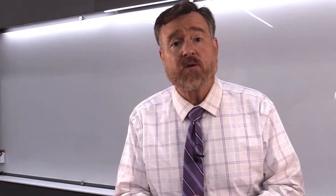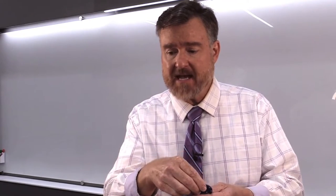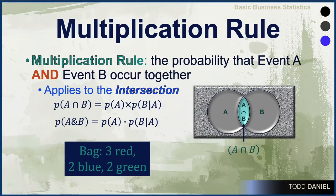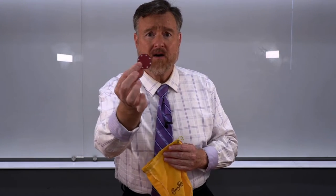For this example, I'm going to use poker chips. I have three red poker chips, which I place in the bag, two blue poker chips, and two green poker chips. We are going to randomize and then choose one at random. The probability of choosing a red poker chip the first time is three over seven — there are three red poker chips among the seven in the bag. I choose the first poker chip, and it is red.